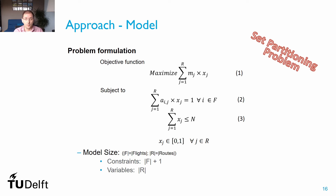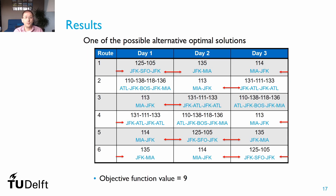Solving this model on the Bazargan example yields multiple alternative optimal solutions with the same objective function value. One possible solution assigns six routes — one per aircraft. For example, route one covers flight 125 and flight 105 on day one (JFK to San Francisco and back), then flight 135 to Miami, and on day three flight 140 back from Miami to JFK, creating two maintenance opportunities. Summing all maintenance opportunities across the six routes gives a total objective value of nine.